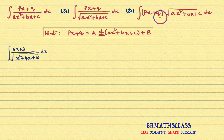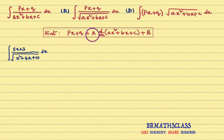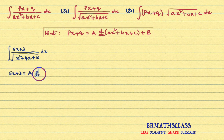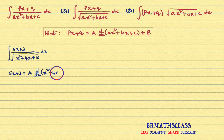What is that procedure? First, we will start with this PX plus Q. We write this PX plus Q as A into the derivative of AX square plus BX plus C, plus B. Here, what is PX plus Q? That is 5X plus 3. This 5X plus 3 we can write as A into d by dx of x square plus 4X plus 10, plus B.